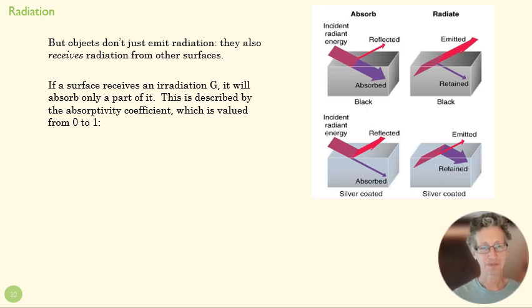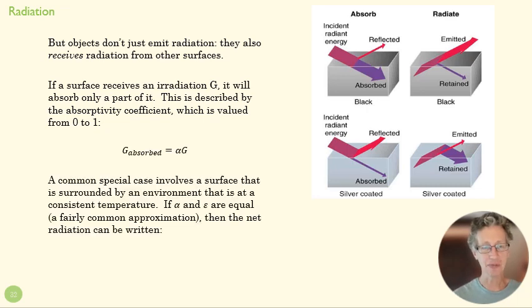We can talk about emission, but we can also talk about irradiation, G. Different surfaces are going to absorb or reflect that radiation depending on the surface. A silver coated mirror is going to have a really low alpha value here, which means it's not going to absorb very much energy. But a black t-shirt is going to absorb quite a bit of it. Oftentimes that alpha and that epsilon are similar values.